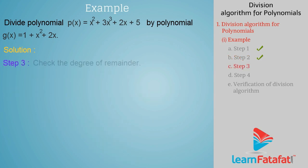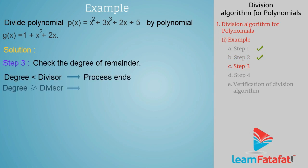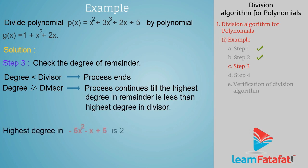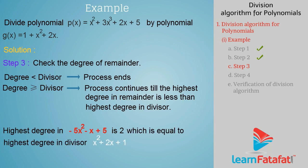Step 3: Check the degree of the remainder. If it is less than the divisor, then the process ends. If it is greater than or equal to the divisor, then divide it until the highest degree in the remainder is less than the highest degree in the divisor. Since the highest degree in minus 5x squared minus x plus 5 is 2, which is equal to the highest degree in the divisor x squared plus 2x plus 1, we should carry out the division process further.